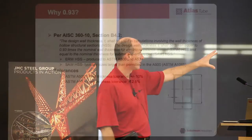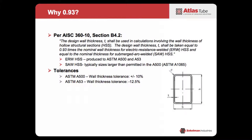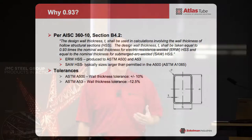Looking at Section B4.2 of AISC 360, the current wording — which has changed in each manual over the past few years — states: the design wall thickness T shall be used in calculations involving the wall thickness of hollow structural sections. The design wall thickness T shall be taken equal to 0.93 times the nominal wall thickness for electric resistance welded (ERW) HSS, and equal to the nominal thickness for submerged arc welded (SAW) HSS. That covers essentially everything made to A500 or A53.